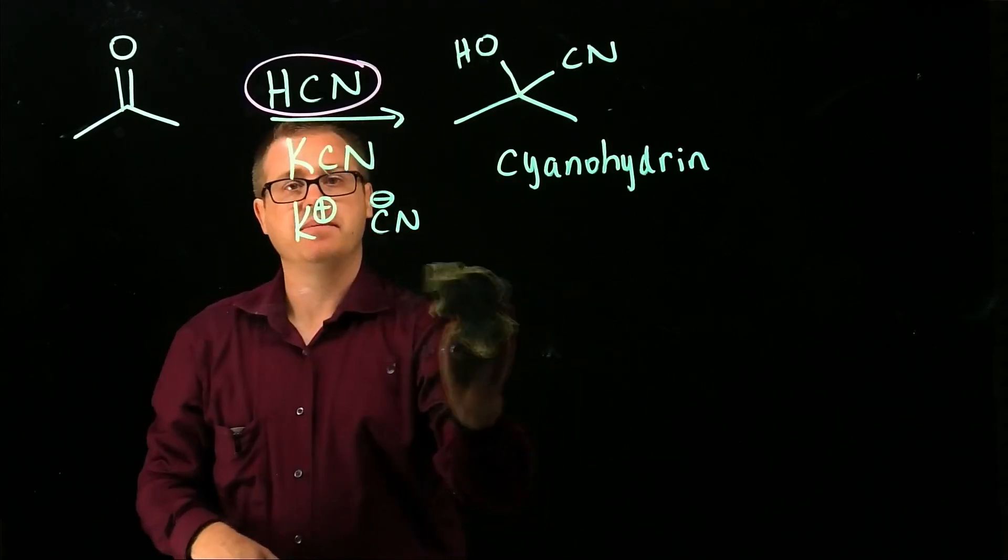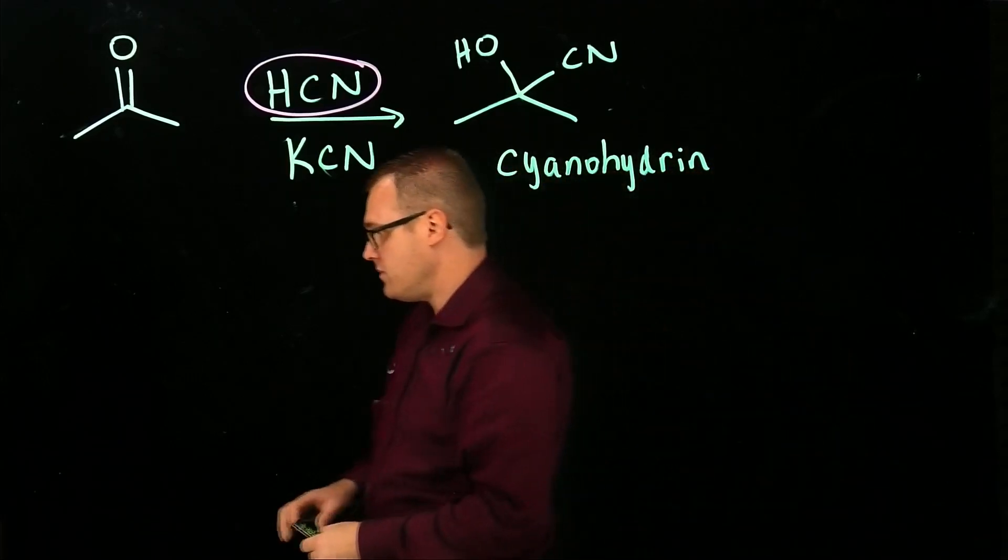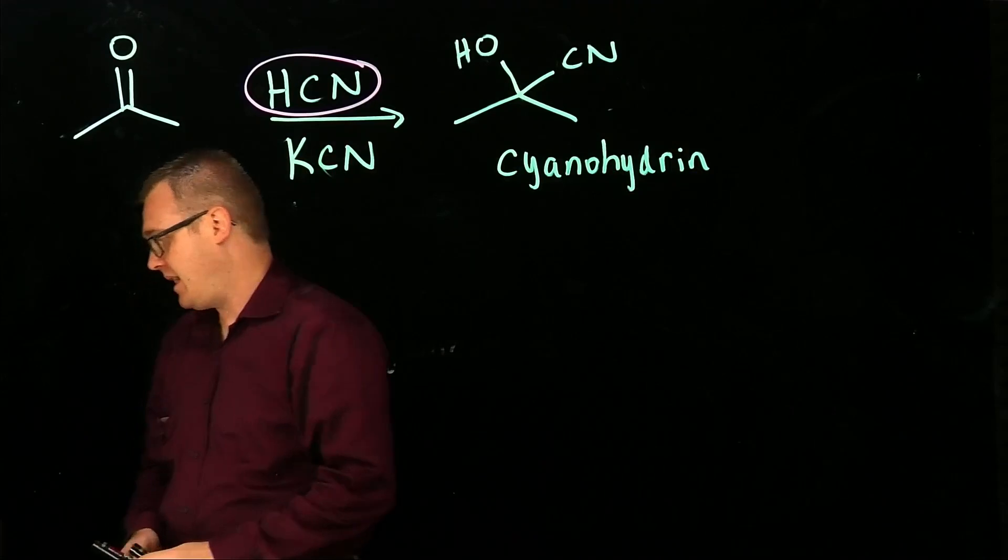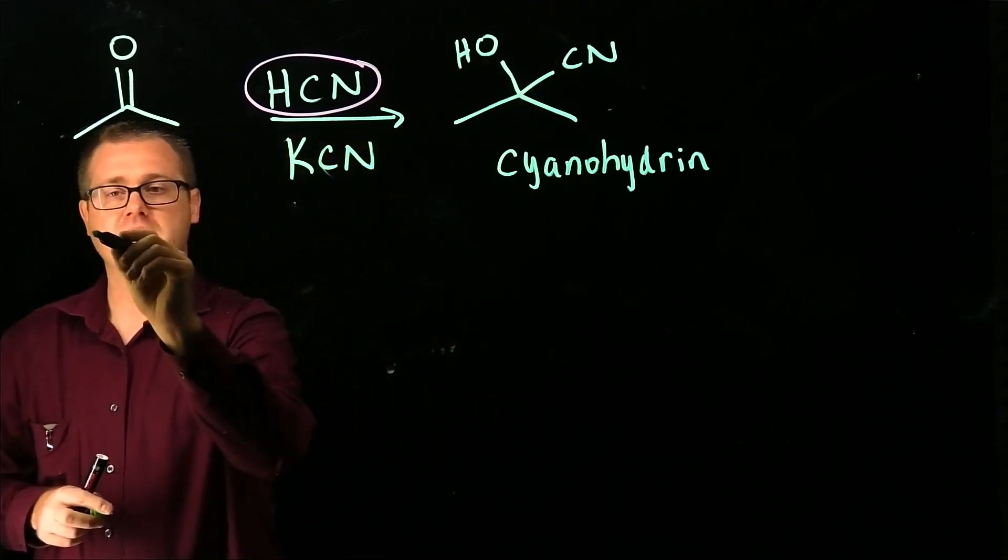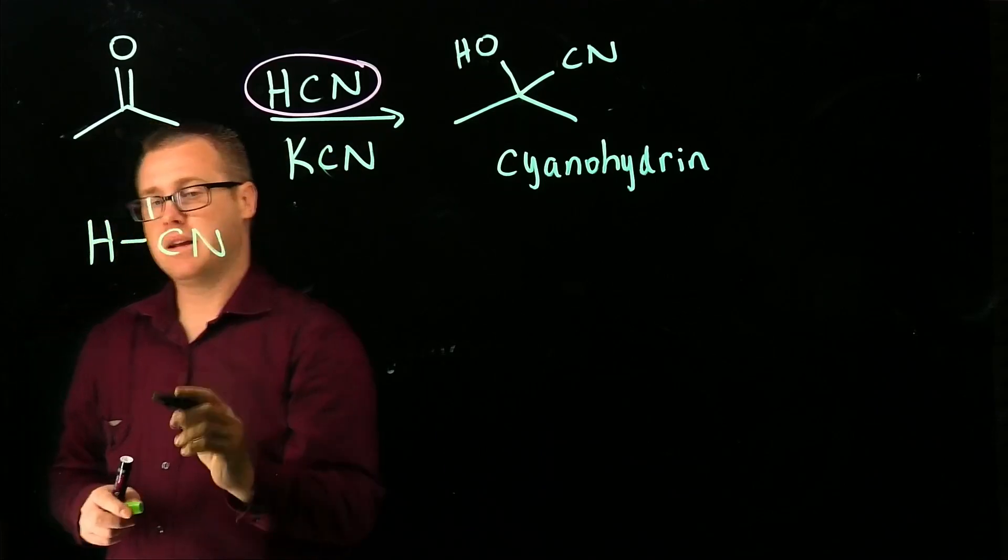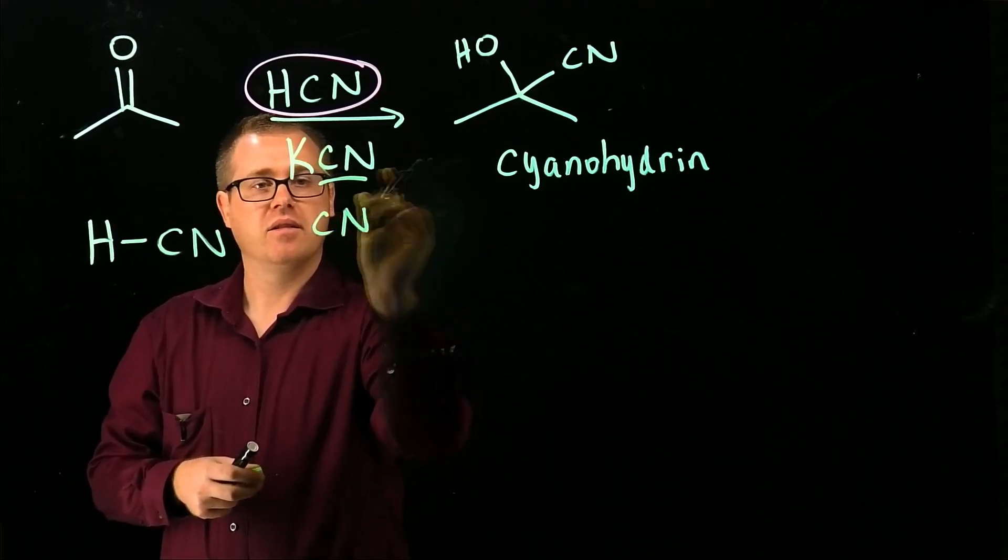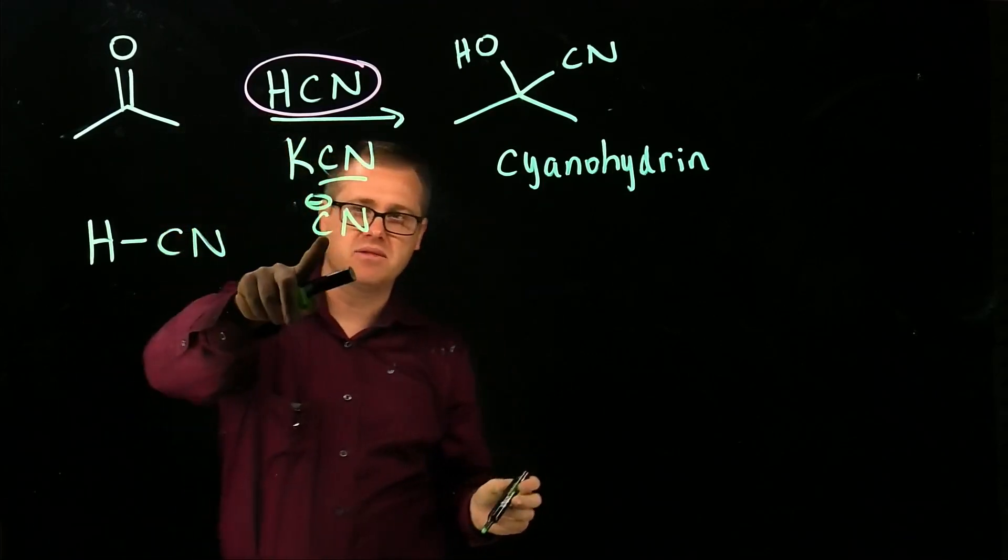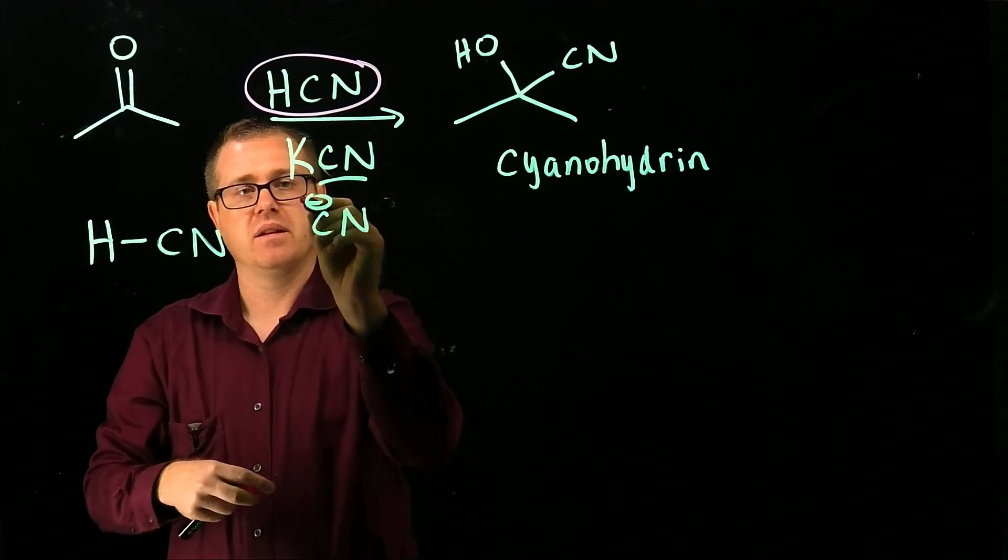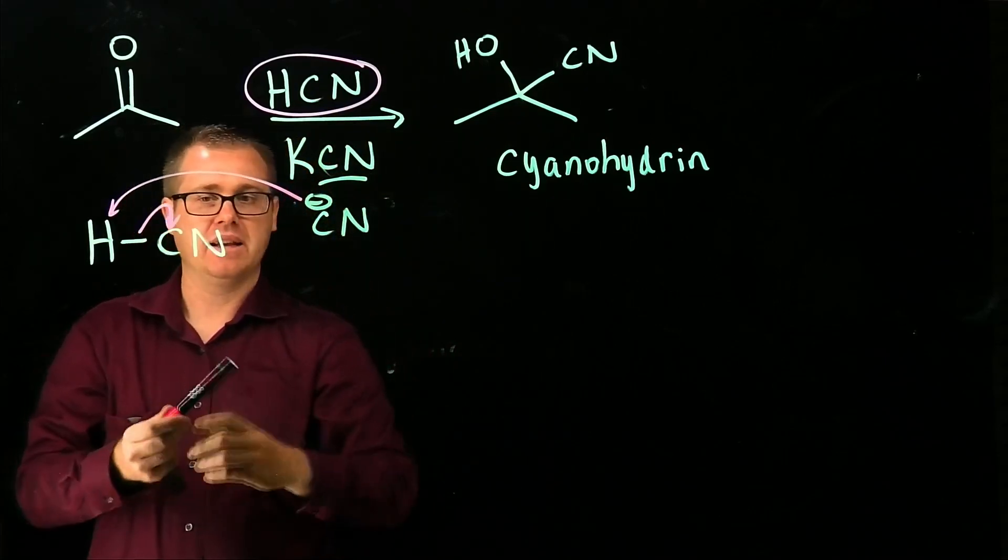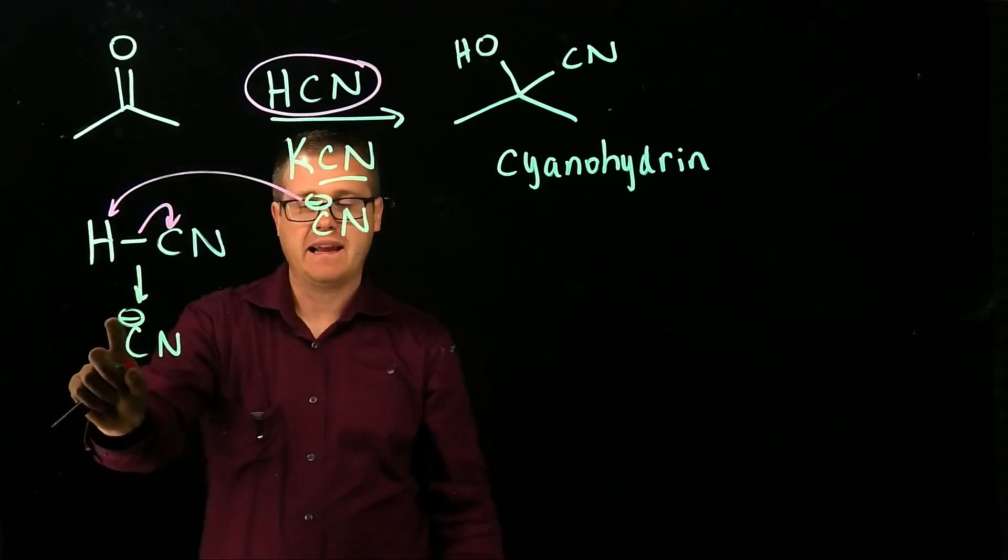So when we look at this mechanistically, what's happening here is that we're going to have our hydrogen cyanide, and then we have this species right here, which acts as the base. So this right here is used to help deprotonate that. That's going to come in and deprotonate it and give us more of it. So there's our attacking species.